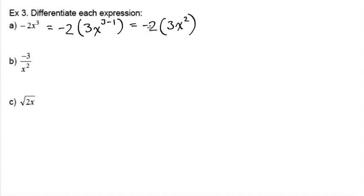But now we can multiply those constant terms of the coefficients together. So negative 2 times 3 is negative 6, so negative 6x squared.